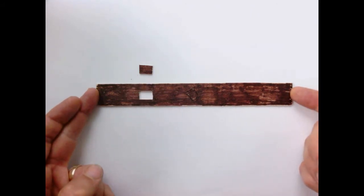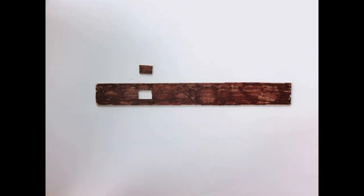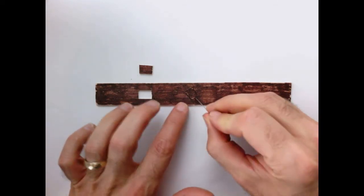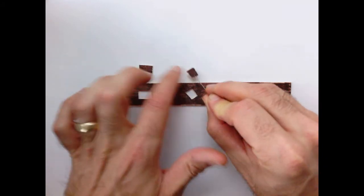So our hole, again, is really an imaginary hole. And I can remove a section like this. I could remove a different section at a different angle.